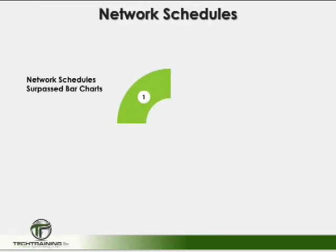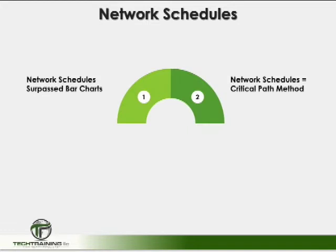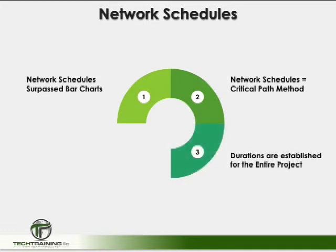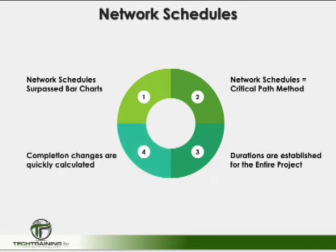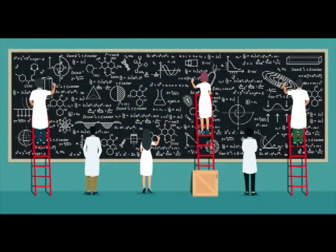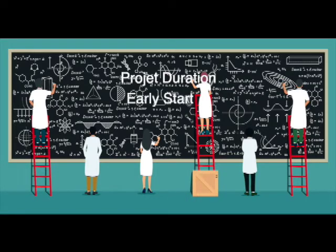Network schedules became the favorite of the construction industry, especially on larger projects. The network schedule is considered a CPM model. Using the critical path method, each task is assigned a specific duration, allowing the construction manager to create calculations that run throughout the entire network of tasks. These algorithms give the manager the earliest a project is expected to be completed, the earliest any activity can begin, the latest any activity can begin, and the impact of any delays on the project.